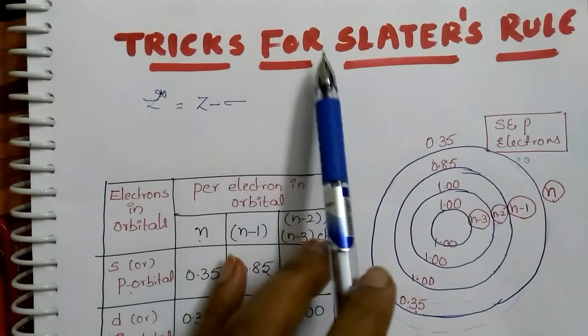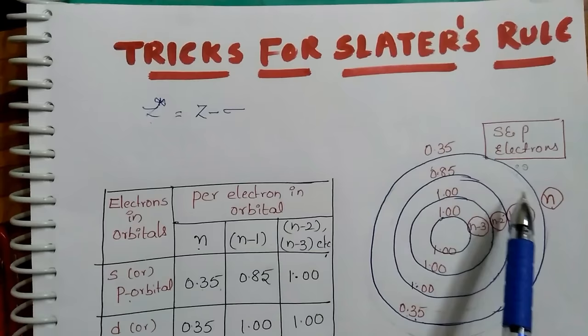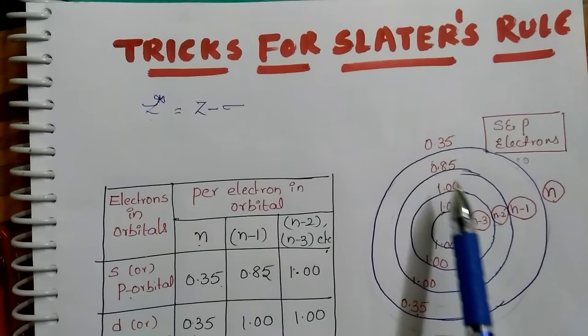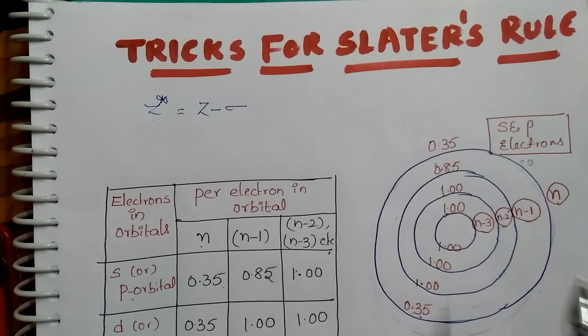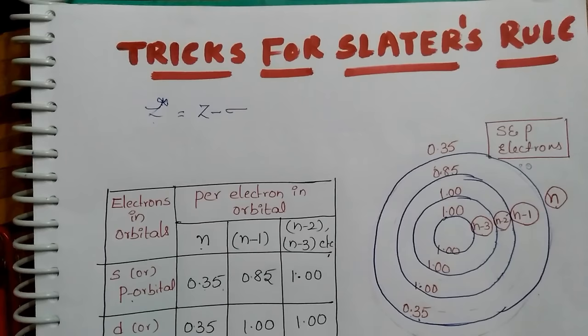Hi students, in today's class I am going to tell you the trick — Slater's rule — which is nothing but the concept of effective nuclear charge. When an electron is present in an orbital of a multi-electron atom, because of the presence of more electrons in the same orbit or other orbits, this electron will feel less nuclear charge from the nucleus.